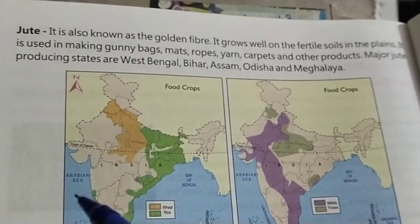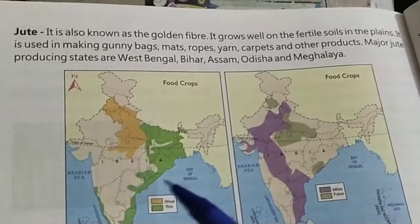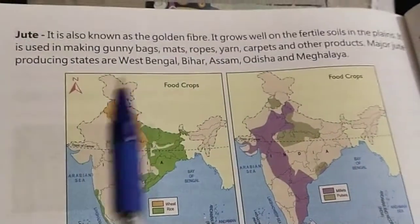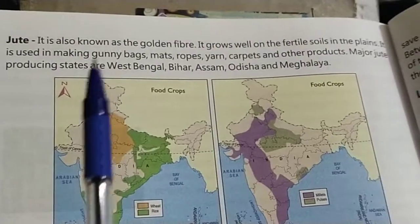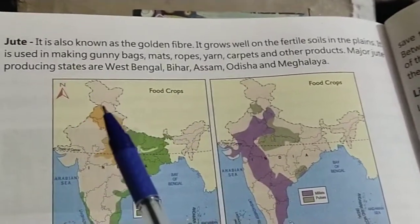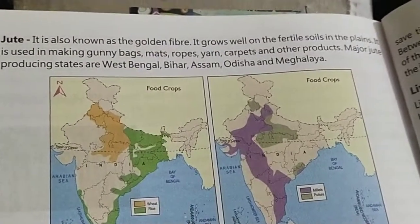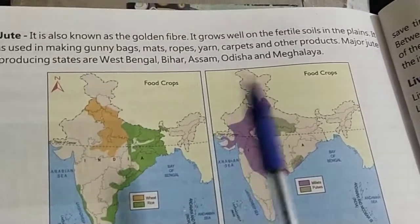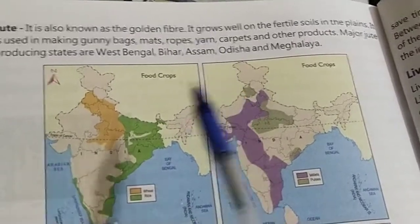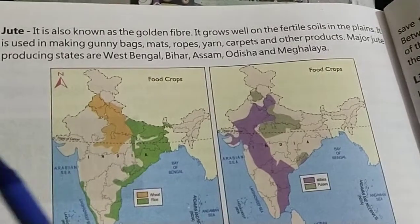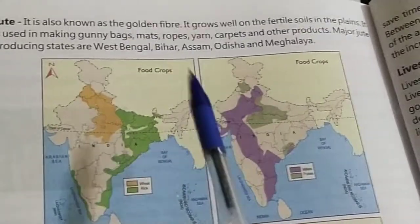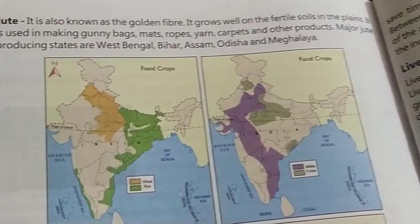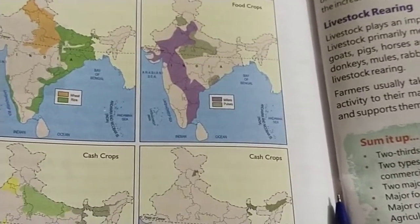Jute is also known as golden fiber because of its golden color. It grows well on the fertile soil of the plains. Jute is used in making gunny bags, mats, ropes, yarn, carpets, and other products. The major jute-producing states are West Bengal, Bihar, Assam, Odisha, and Meghalaya. This covers the chapter content; back exercises will be discussed in the next video.